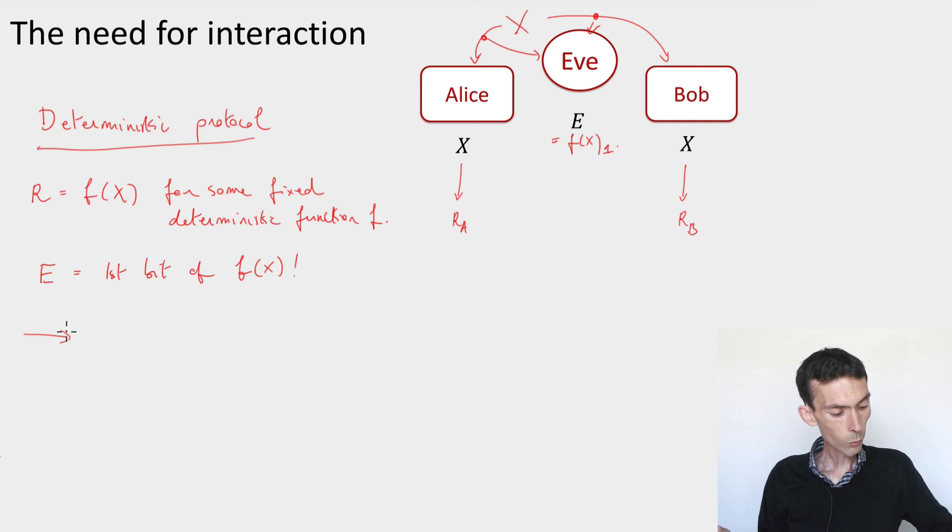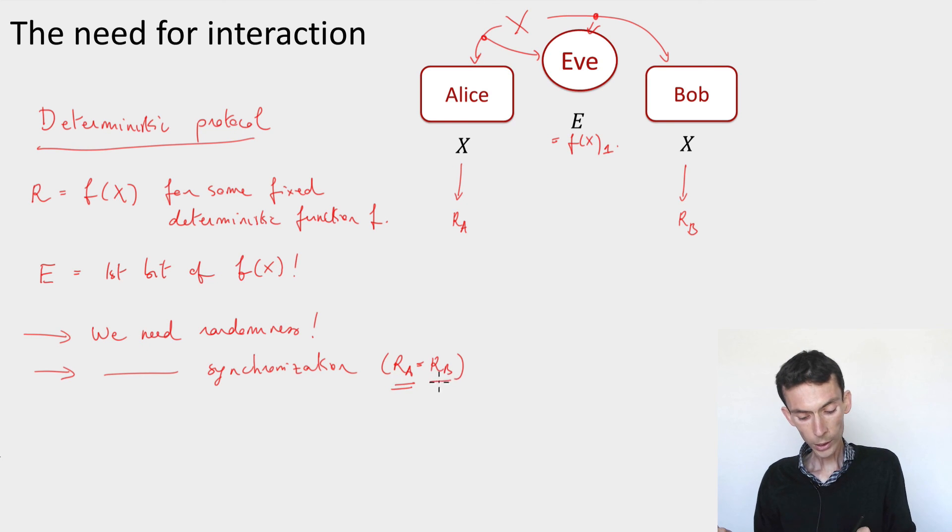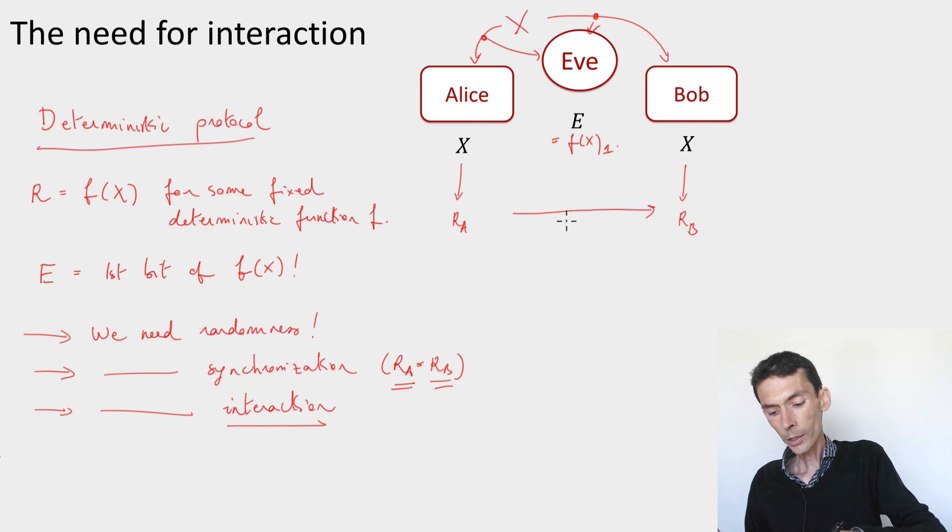So this means that we need randomness. But if there is randomness, then there needs to be synchronization. Because we want Alice and Bob to come up with the same string, rA and rB, so they can't just use their own randomized procedures. This wouldn't make them come up with the same result. And so if they need to synchronize, they need to interact. So this interaction is absolutely needed. It's going to make our task a little bit harder, but it's needed. And what we'll see is that it's possible to achieve privacy amplification using only one-way communication. So in the end, there will be a single message sent from Alice to Bob. So it's not going to be that bad, and we'll see this in the next module.